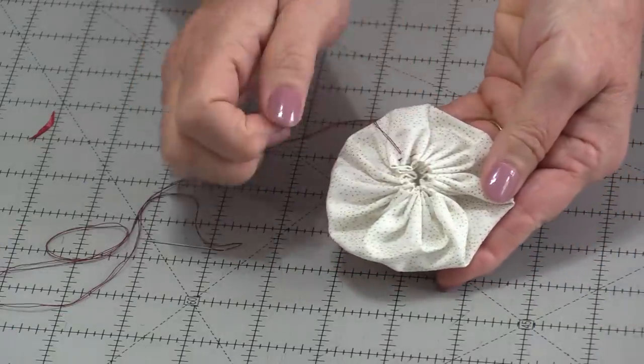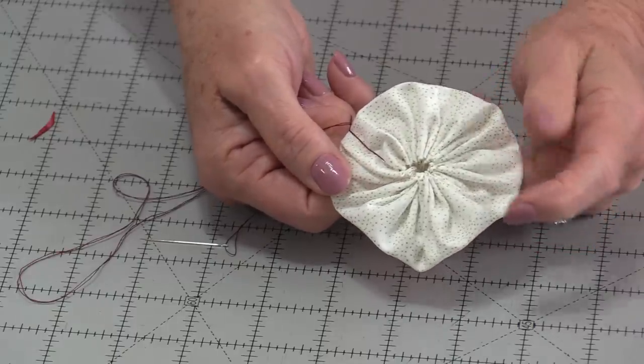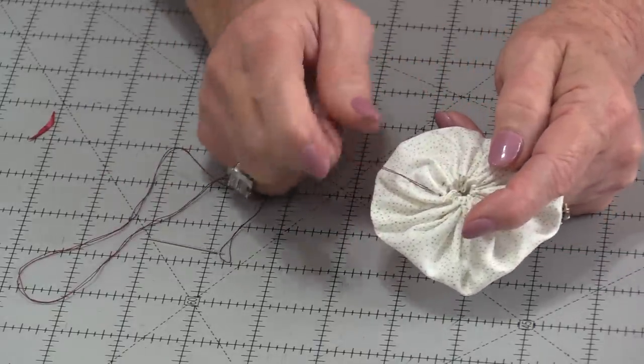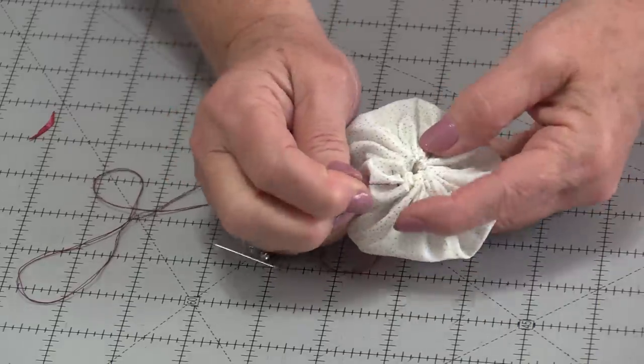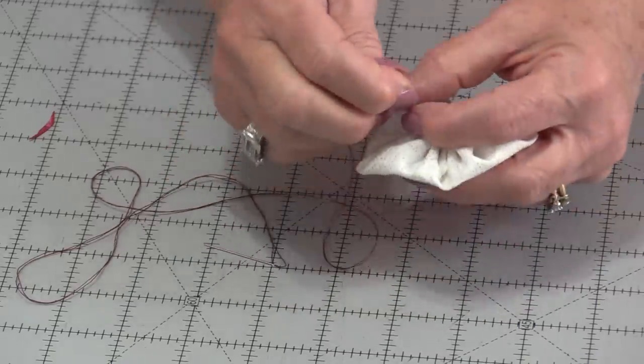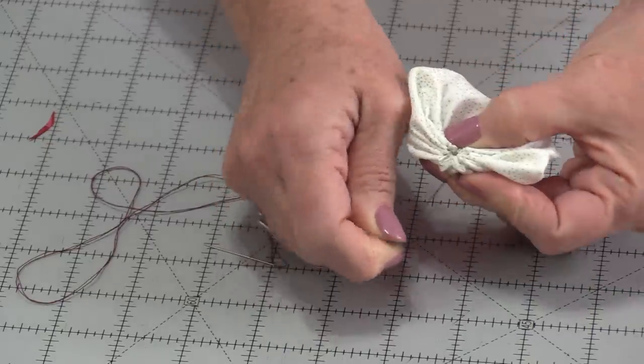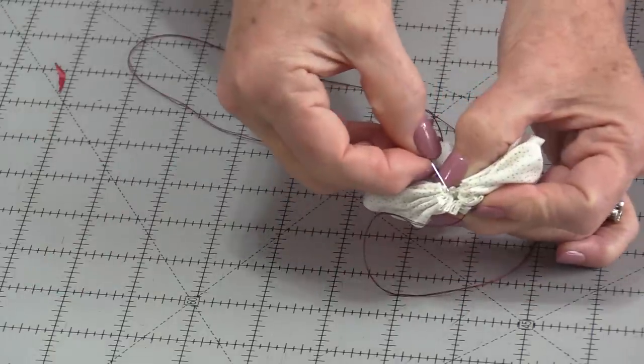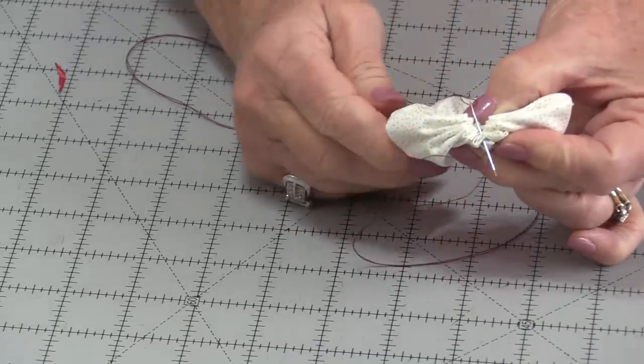From here we can make sure that yoyo center is in the center. Once we have that all centered we need to tie a knot to hold this thread in so it doesn't come apart. There are two different areas we can tie the knot. The first one will be on the top. Pull that thread tight and with your fingers pinch the center of that circle so the thread doesn't come undone. Now I can just take a stitch in one of those little ends and tie a knot.